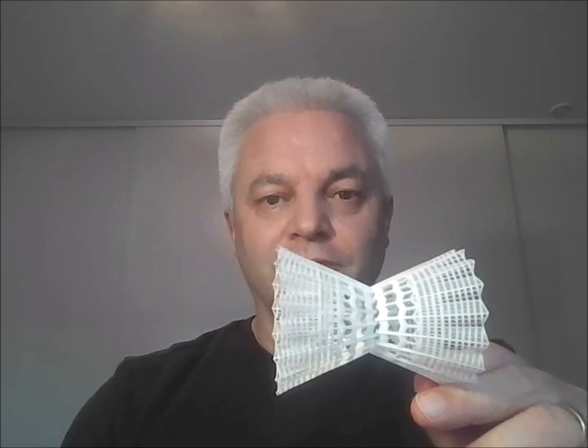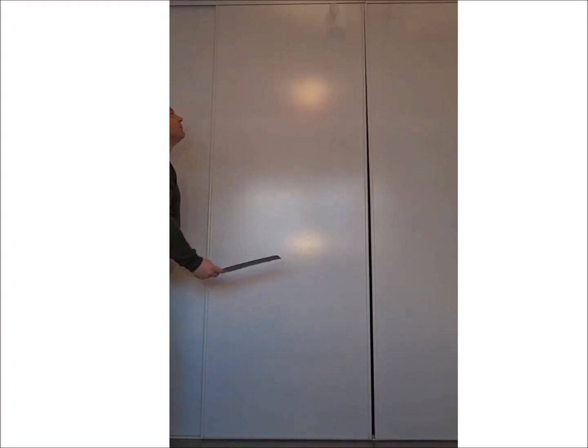Similar experiment can be done with a badminton shuttlecock, slightly modified for the experiment, in order to make it roll. Here again, the shuttlecock has a vertical speed and is spinning, which induces the Magnus force towards the left.